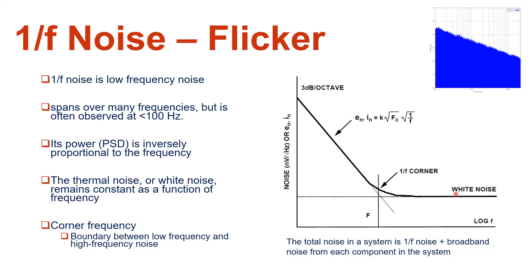The spectral density plotted here is expressed in nanovolts per root hertz, so it is basically voltage spectral density. En stands for noise voltage and In stands for noise current. The slope of this line is 3 dB per octave, and the voltage spectral density or current spectral density is given as k — a constant — multiplied by the square root of fc, which is the corner frequency, multiplied by the square root of 1-over-f.